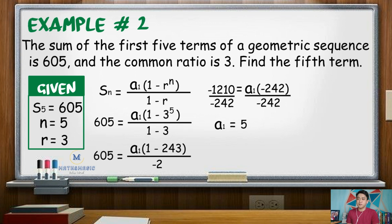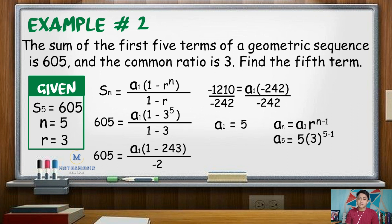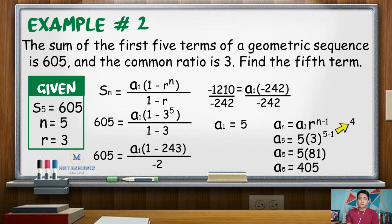Thus, the first term of the sequence is 5. To find the fifth term, we use the formula for the nth term of a geometric sequence: a sub n equals a sub 1 times r raised to n minus 1. So a sub 5 equals 5 times 3 raised to 5 minus 1. Since 5 minus 1 is 4 and 3 raised to 4 is 81, multiplying by 5 gives 405. Hence, the fifth term of this geometric sequence is 405.